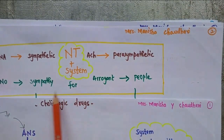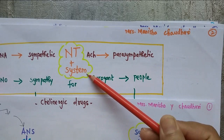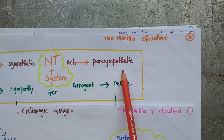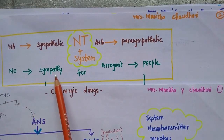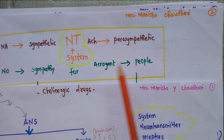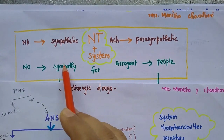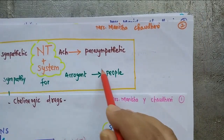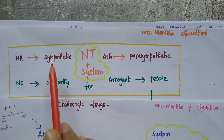This trick is very essential to remember the system as well as the neurotransmitters involved. NA is for sympathetic, ACh is for parasympathetic. The trick is: 'No sympathy for arrogant people.' No sympathy for arrogant people. 'No' is for noradrenaline, 'sympathy' is for sympathetic system, 'arrogant' is for ACh (acetylcholine), and 'people' is for parasympathetic.